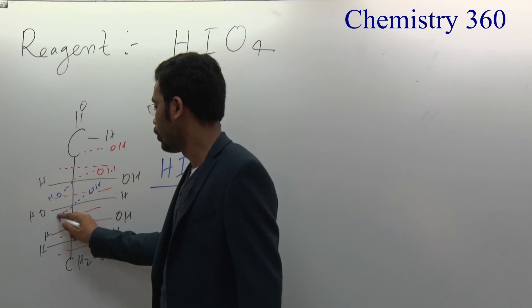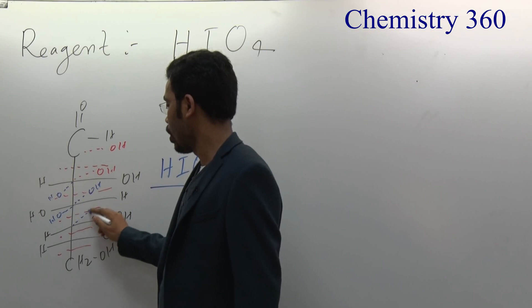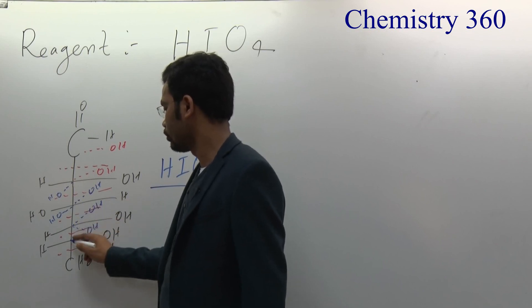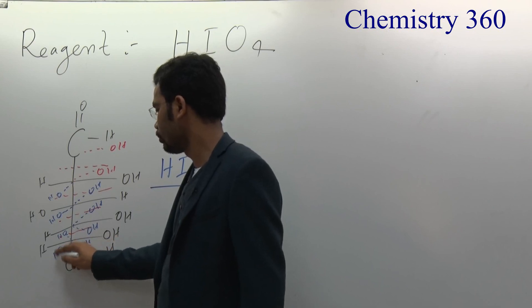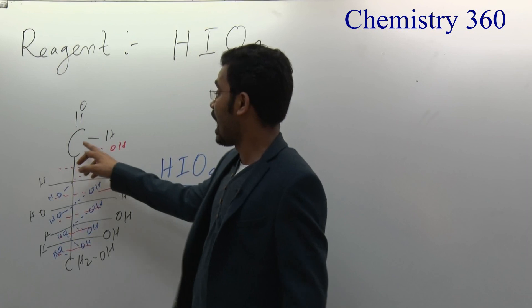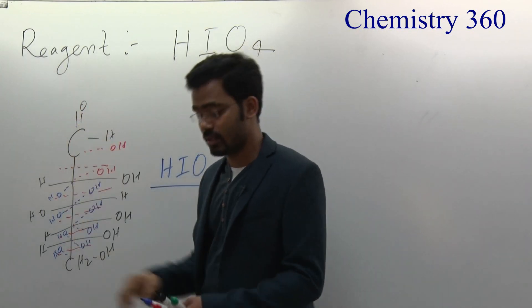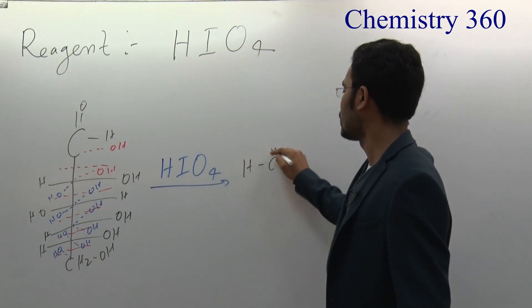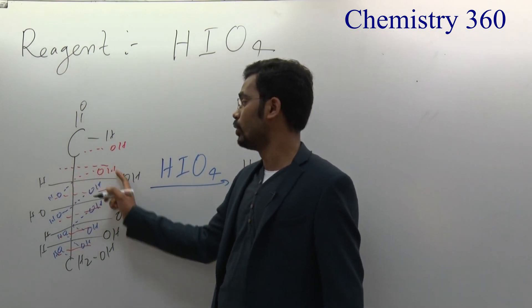When you break one bond, you always add one OH on both carbons. So look at this carbon: it has one H, one C=O, and one OH — that is formic acid (H-C(=O)-OH). And on this other carbon, there are 3 OH groups.